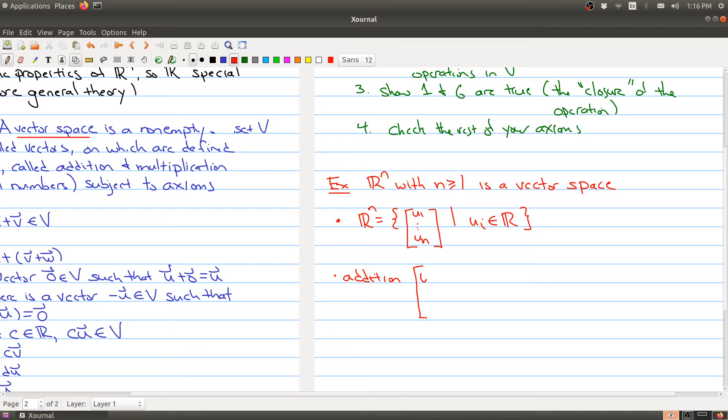So how do you add your elements together? So u1 through un plus the vector v1 through vn gets sent to the new vector u1 plus v1 up to un plus vn, right? So we're just doing component wise addition.